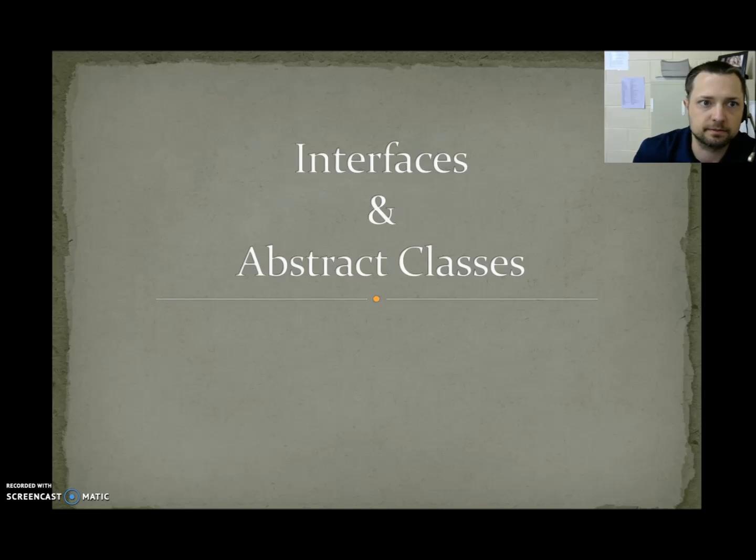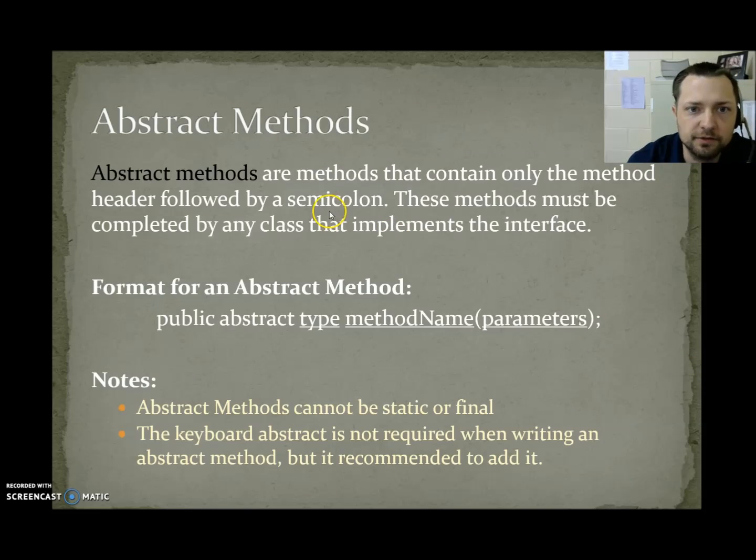Interfaces and Abstract Classes. Abstract methods are methods that contain only the method header followed by a semicolon. These methods must be completed by any class that implements an interface. The format for an abstract method is public abstract, whatever your return type is, the name of the method, followed by some parameters.